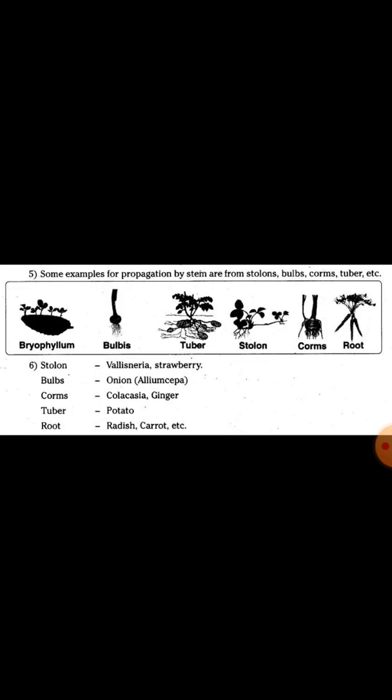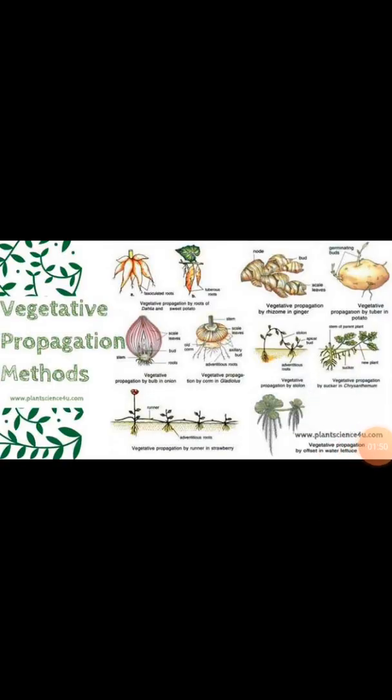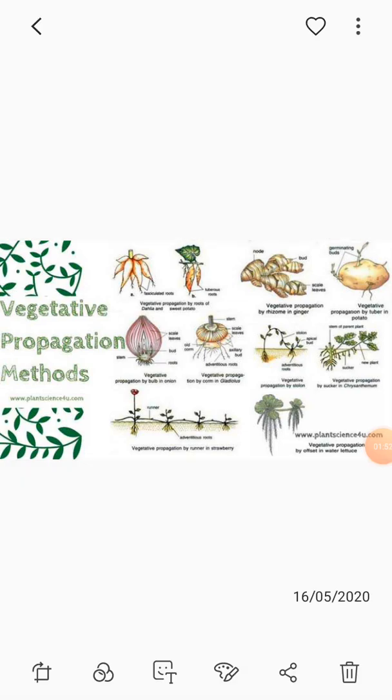Stolon examples include Cynodon and strawberry. Bulbs include onion and garlic. Corms include colocasia and ginger. Also in ginger, tubers like potato, and others - these are underground stem types. There are also aerial stem and sub-aerial stem modifications through propagation by stem. Some vegetative reproduction examples in stem include rhizome in ginger and tuber in potato.